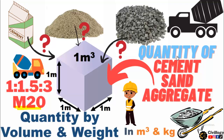M20 means the concrete having the strength of 20 MPa. In my previous three videos, we calculated these quantities for concrete M5, M7.5 and M10, the link of which is given in the description. Those concretes were a type of lean concrete and this is rich concrete.